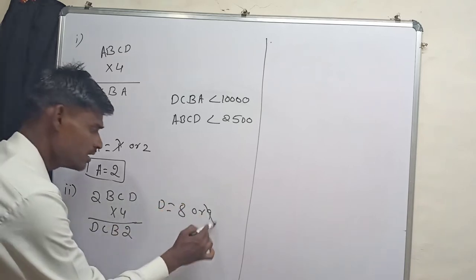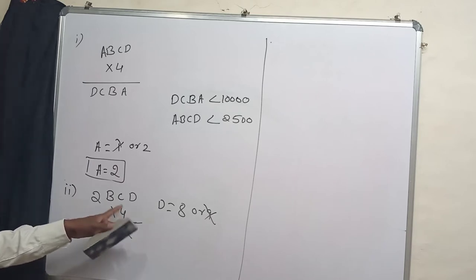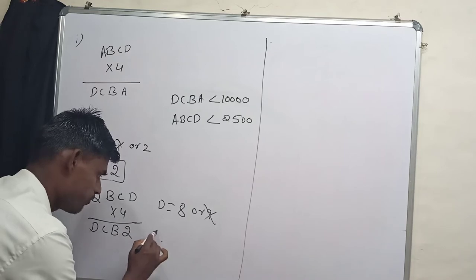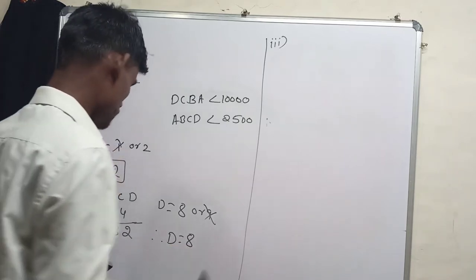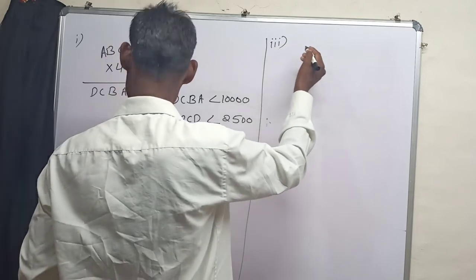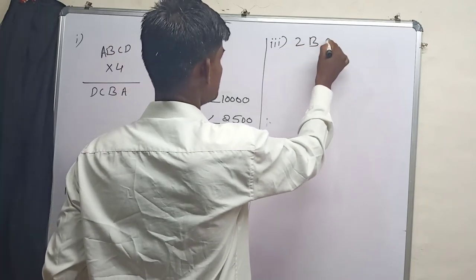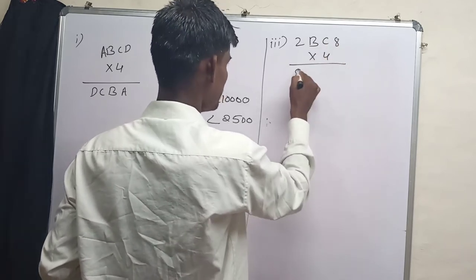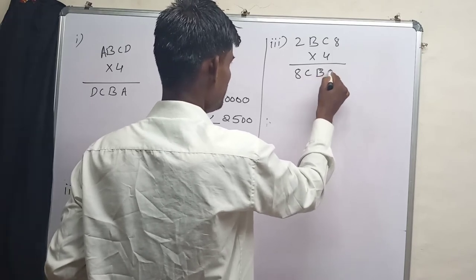D can't be 9 because if you put D equals 9, we will get 4 times 9 or 36 and we would not get 2 in unit place. Therefore D is equals 8. Now I am going to put D equals 8 in this puzzle. What I am going to write: 2BC8 into 4 is equals 8CB2.